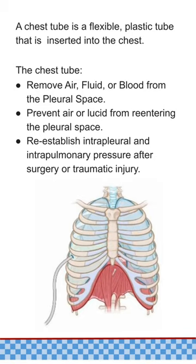A chest tube is a flexible tube inserted through the chest wall into the space between the lungs and the chest wall, known as the pleural space. The chest tube helps drain air, fluid, or blood that has accumulated in the pleural space. This accumulation can happen due to various reasons, such as pneumothorax, which is when air gets trapped in the pleural space, causing the lung to collapse partially or completely. Hemothorax occurs when there is blood accumulation in the pleural space.